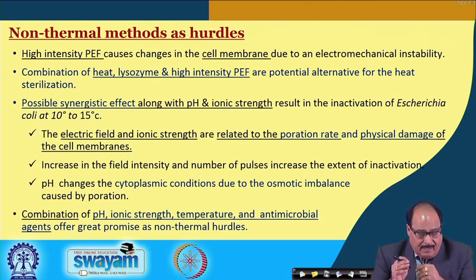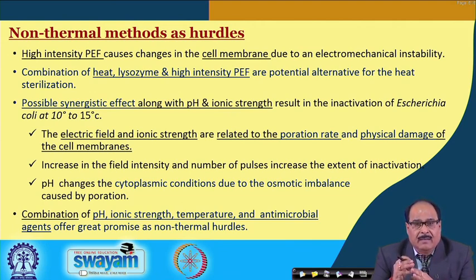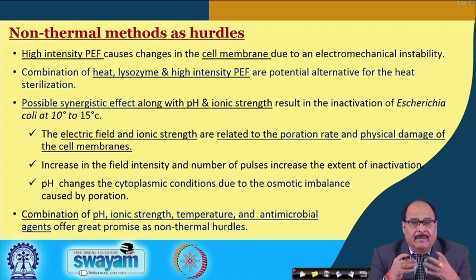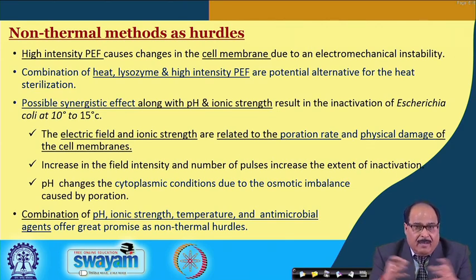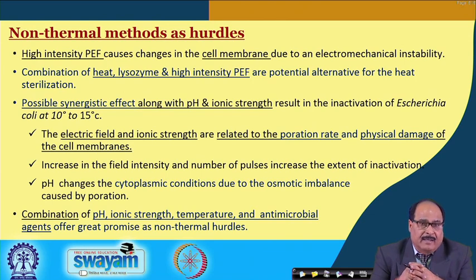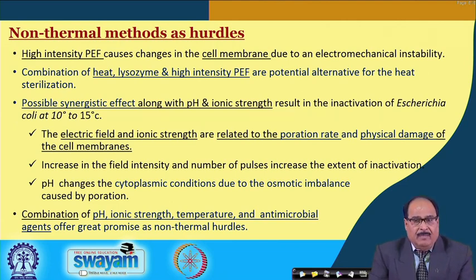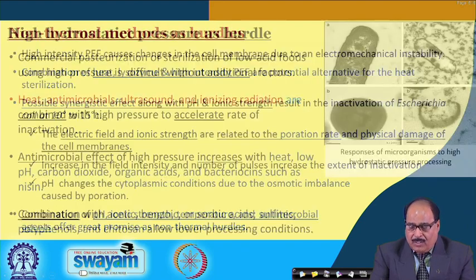pH changes result in changes in the cytoplasmic conditions, mainly due to the osmotic imbalance caused by poration. So poration and cytoplasmic changes or osmotic imbalance together have a synergistic effect and can result in the inactivation of even toxin-producing microorganisms or food spoilage microorganisms even at a comparatively lower pH. This combination of pH, ionic strength, temperature, and antimicrobial agents holds great promise as potential non-thermal hurdles.